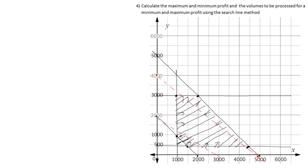For question 4, we calculate the maximum and minimum profit and the volumes to be processed using the search line method. The last point the search line touches as it moves up is the maximum. The very first point the search line touches as it moves down is the minimum value.